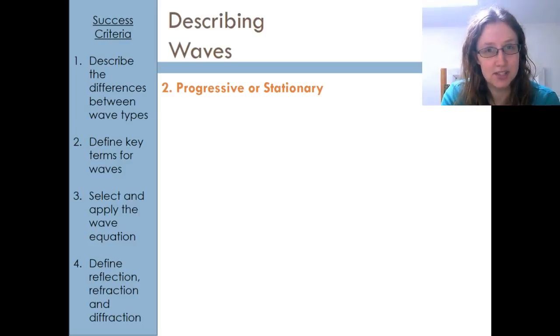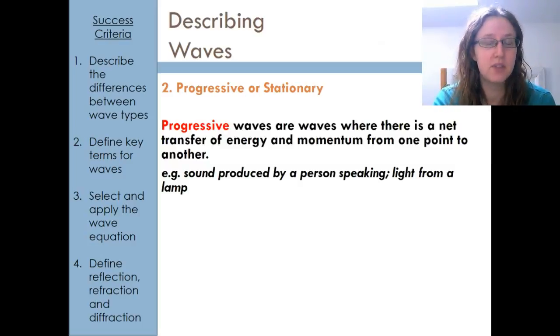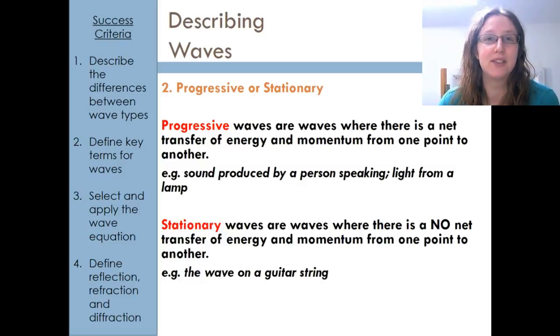So, first option when you look at a wave is either it's electromagnetic or it's mechanical. Next thing is it's either progressive or it's stationary. So progressive waves are waves where there is a net transfer of energy and momentum from one point to another. So, me speaking now with the sound, the energy is going from my mouth to the microphone, which is then picking it up and it's going from the microphone, the speaker at your end to your ears. So there is transfer, the energy is going from one place to another. In a stationary wave, there is no net transfer of energy and momentum. So the wave itself is not causing anything to be moved. So, for instance, the wave on a guitar string is what we might call a stationary wave. The wave itself just travels backwards and forwards up and down that string. So in the net, there is no transfer of energy and momentum.